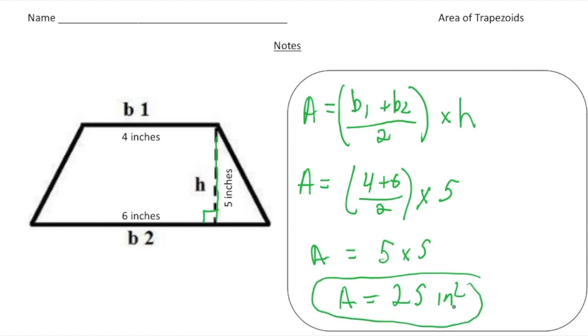So to get the area of any trapezoid is the average of the bases times the height. So why don't you pause the video and try the your turn now problem. When you're done, hit play and you can see how you did. Good luck.